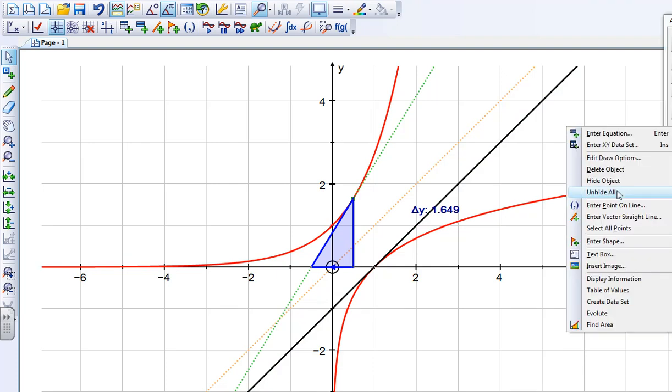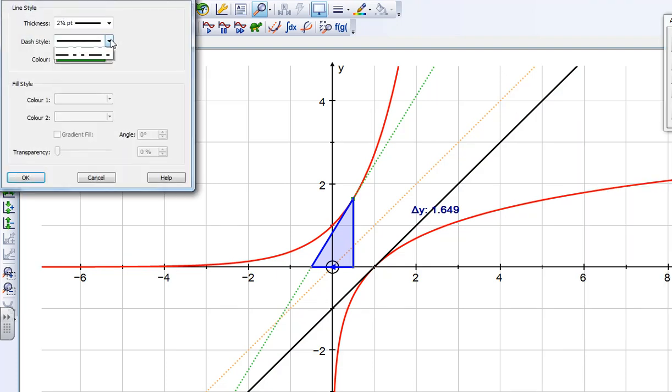If I select that, edit my draw options, I'm going to make it into a dotted line.